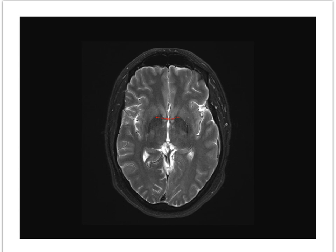Once again the anterior commissure is visible here, demarcating the anterior extent of the third ventricle. These dashed red lines demarcate middle cerebral artery branches that course through the lateral sulci — remember, the lateral sulcus separates the frontal and temporal lobes. The arterial branches are the small black dots.